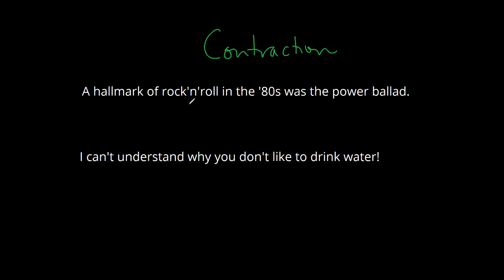So in the first sentence here, rock and roll is missing some letters. We would actually write out rock and roll if we want it to be formal, and similarly '80s should be 1980s. Now we use the apostrophe to reflect the fact that in normal conversation we do tend to drop letters as we try to speed things up. You can see this especially with verbs — can't is short for cannot, and don't is short for do not.